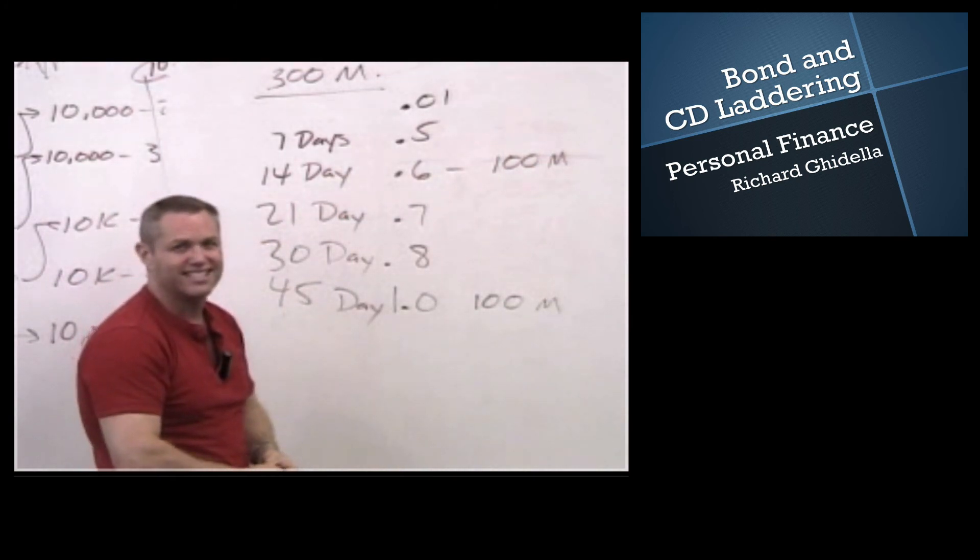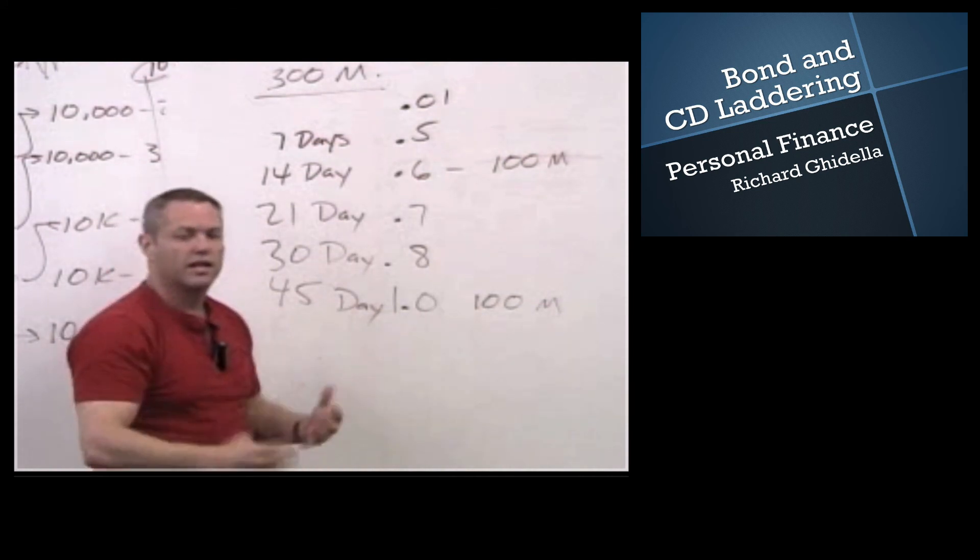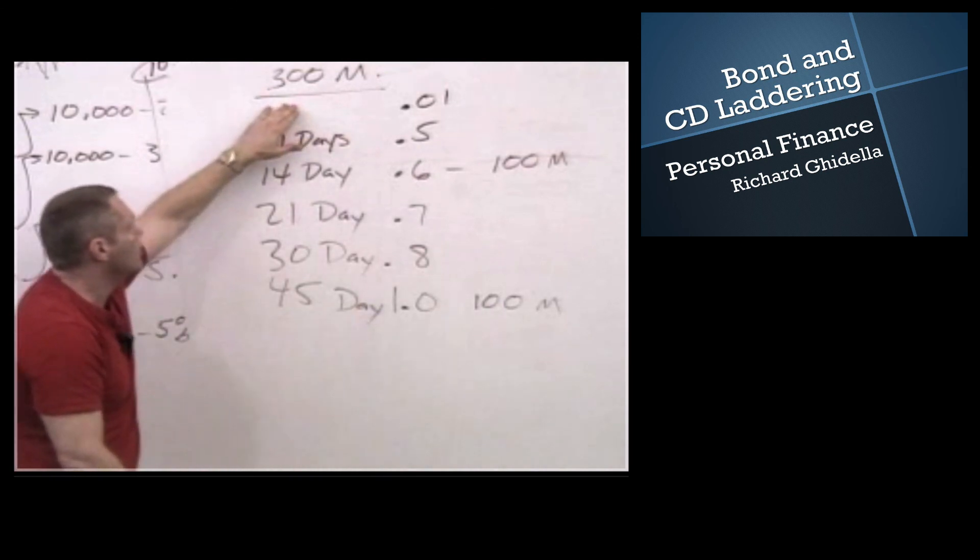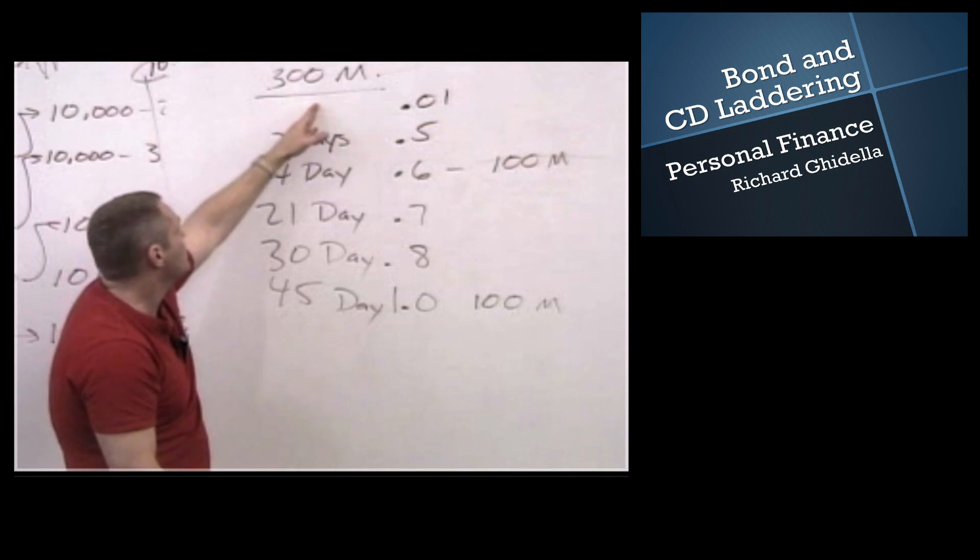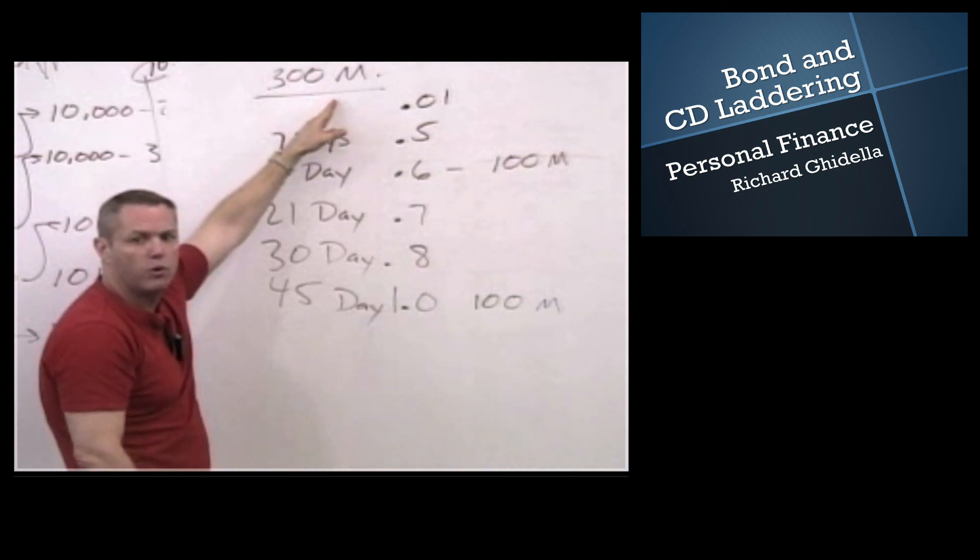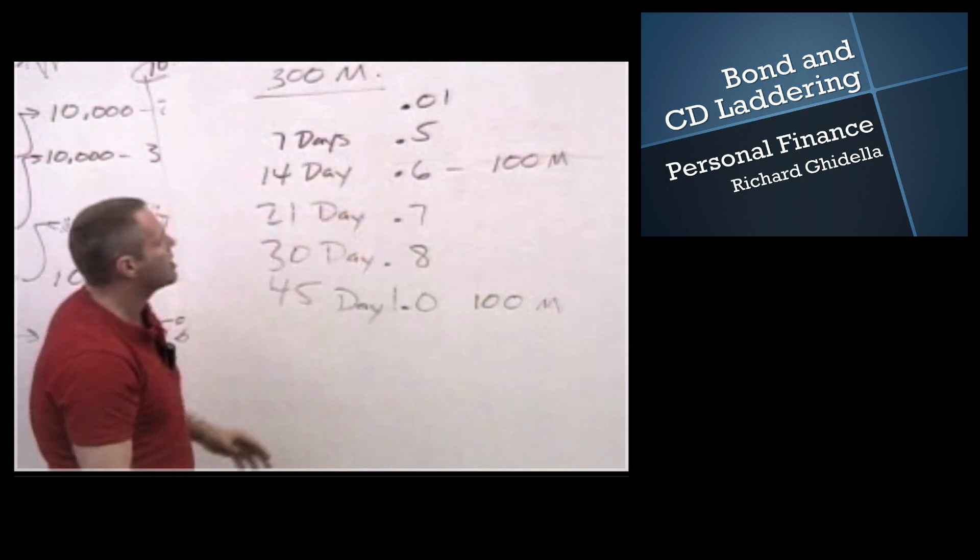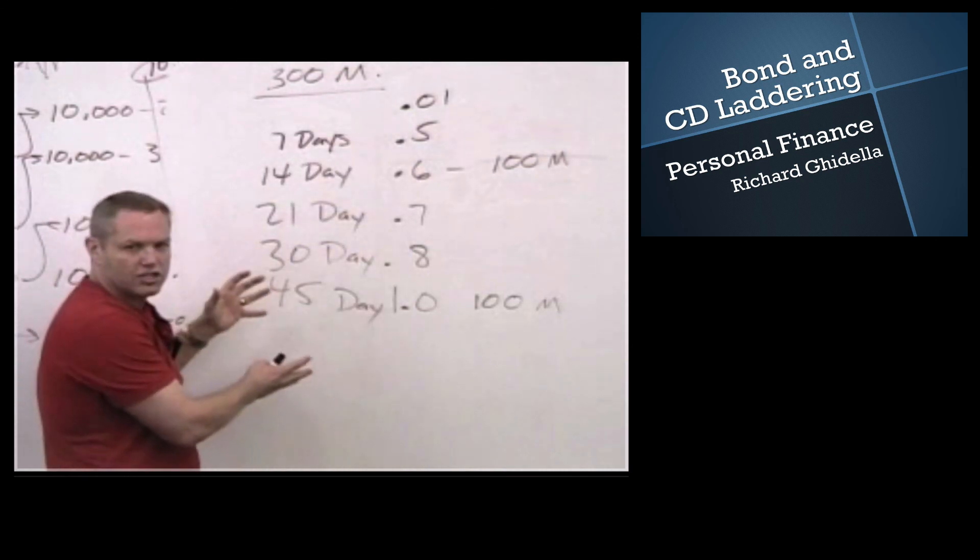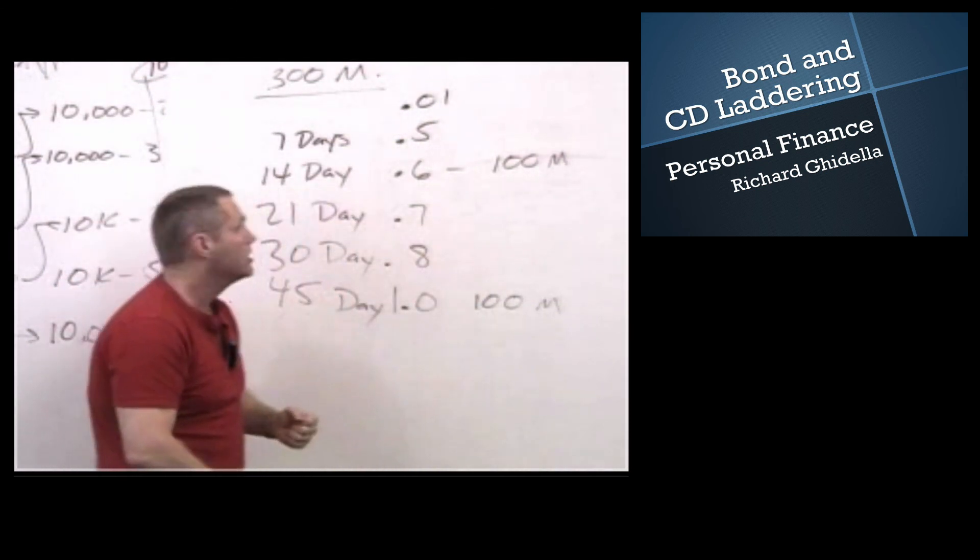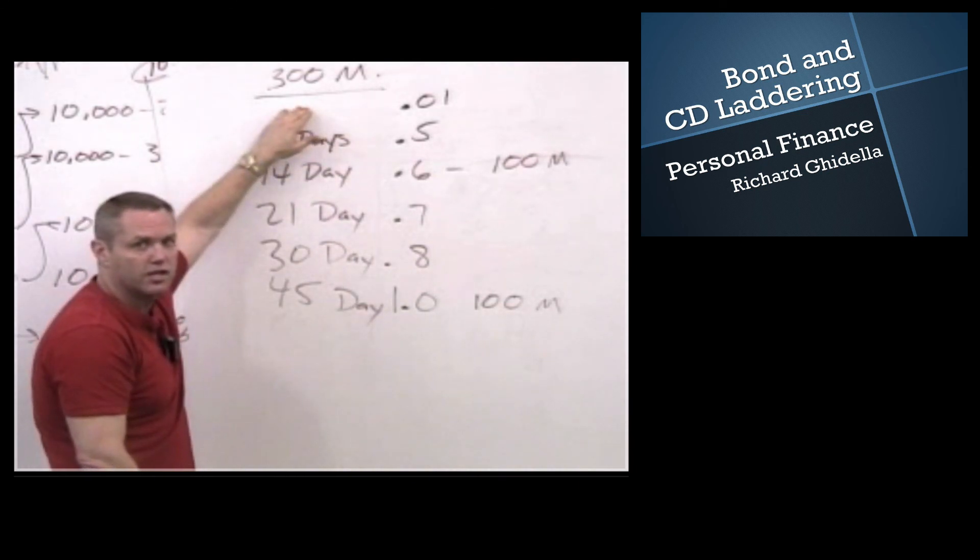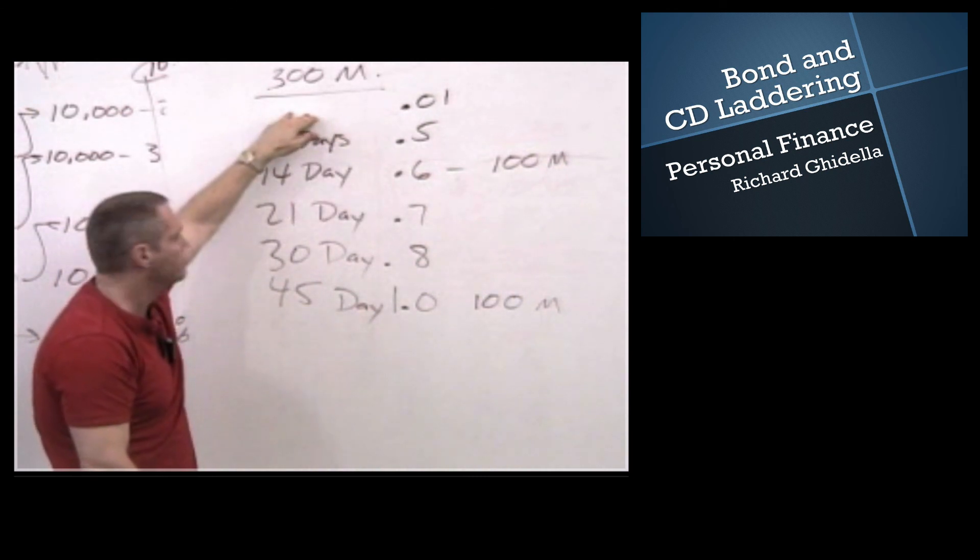So instead of getting a measly 0.01% on my $300 million, maybe within this system, I can actually make half a percent per year. And half a percent doesn't necessarily sound like a heck of a lot of money. But, if I'm going to get half a percent of $300 million, right, 10% is 30, 1% is 3, so half a percent is $1.5 million. So, therefore, by using a laddering concept within a cash account, even if I'm just going to nip an extra half a percent, if there's a lot of money in there, $1.5 million a year, that's a very easy way to pull that off.